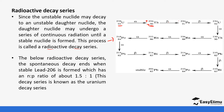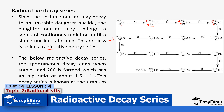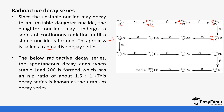Next is a beta particle: the mass number does not change but the atomic number increases by one. After that, the mass number reduces by four and the atomic number also reduces by two — that is an alpha particle. Then the mass number again reduces by four and the atomic number reduces by two, confirming another alpha particle.